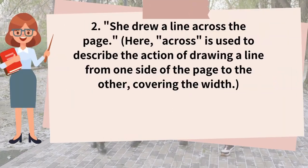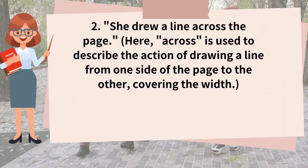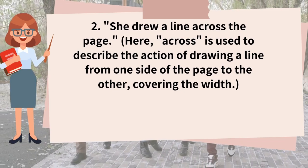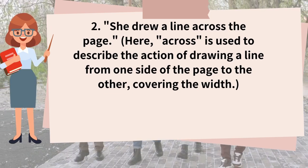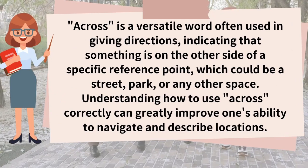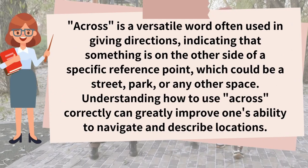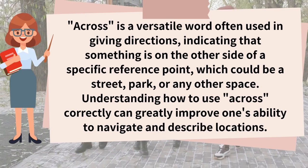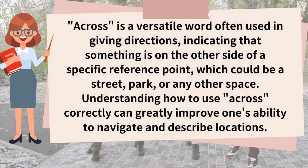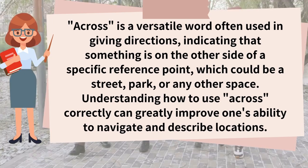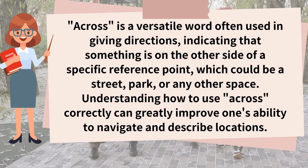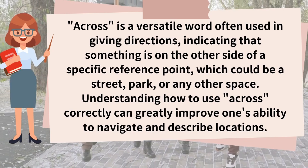Example sentence 2: She drew a line across the page. Here, across is used to describe the action of drawing a line from one side of the page to the other, covering the width. Across is a versatile word often used in giving directions, indicating that something is on the other side of a specific reference point, which could be a street, park, or any other space. Understanding how to use across correctly can greatly improve one's ability to navigate and describe locations.